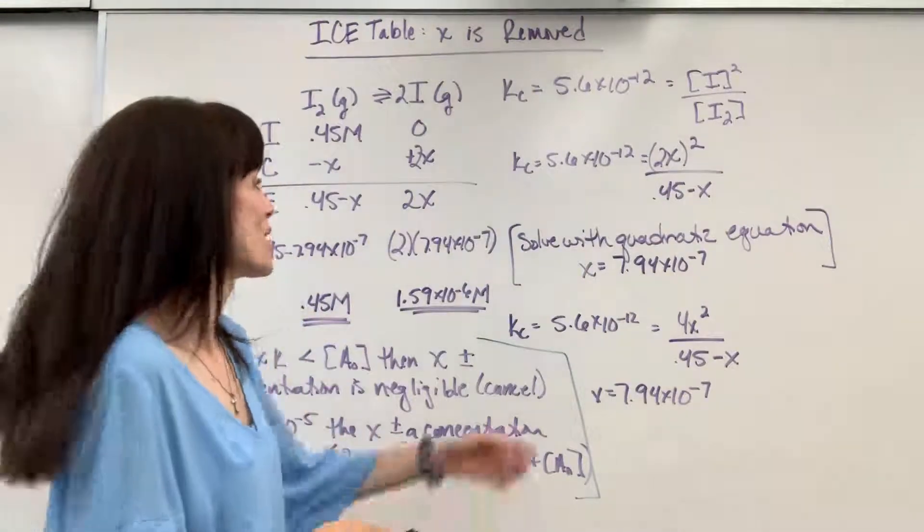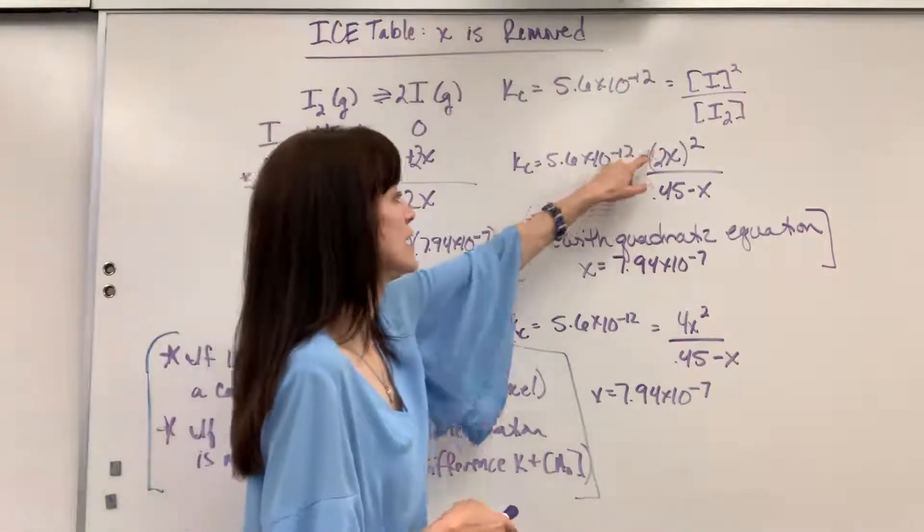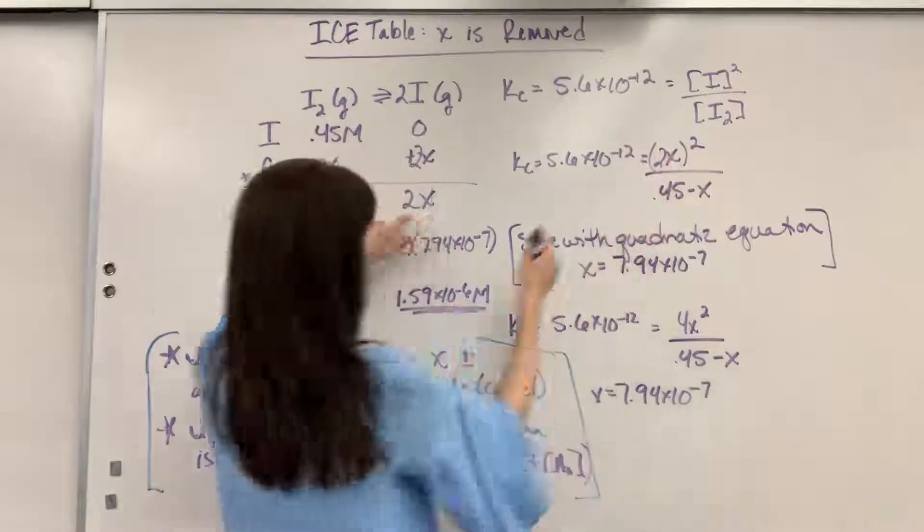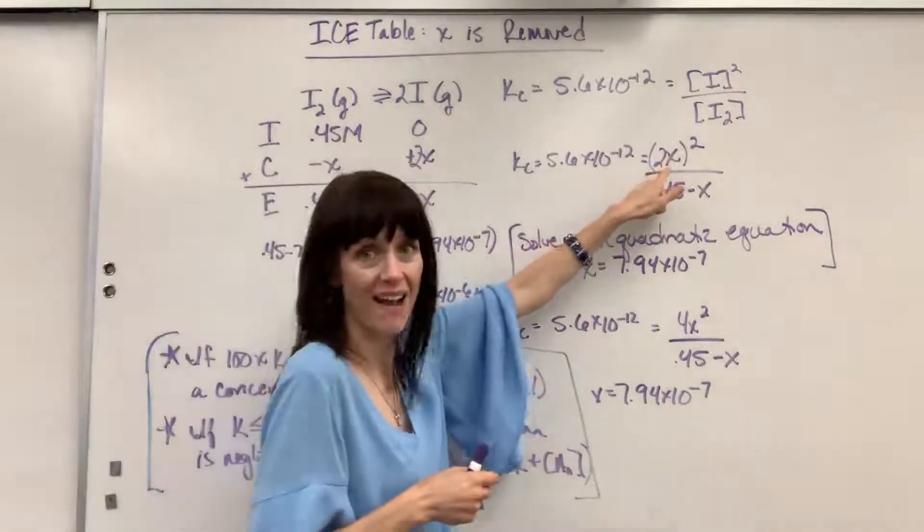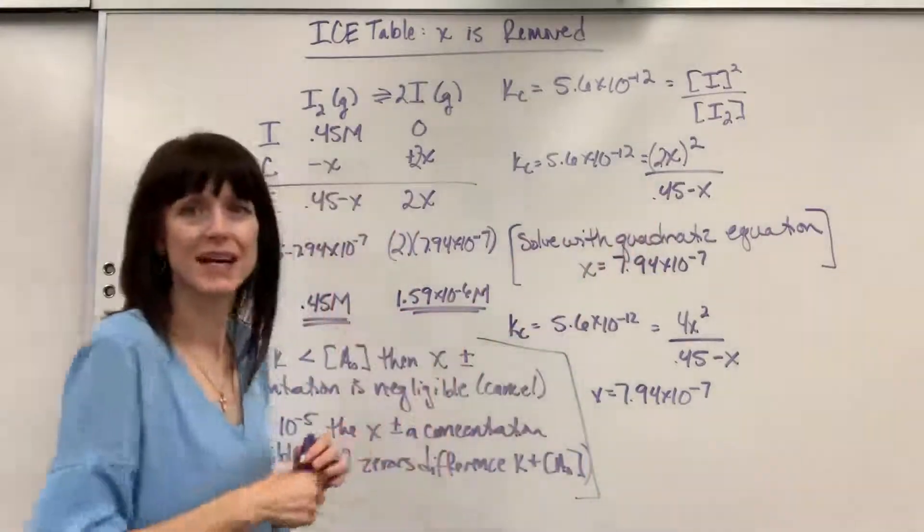Now we plug in everything we have. So our equilibrium constant, 5.6 times 10 to the minus 12, equals my I is 2x squared. Okay, so there's my 2x that I plug in for the I, and it's squared, divided by the I2 is 0.45 minus x.